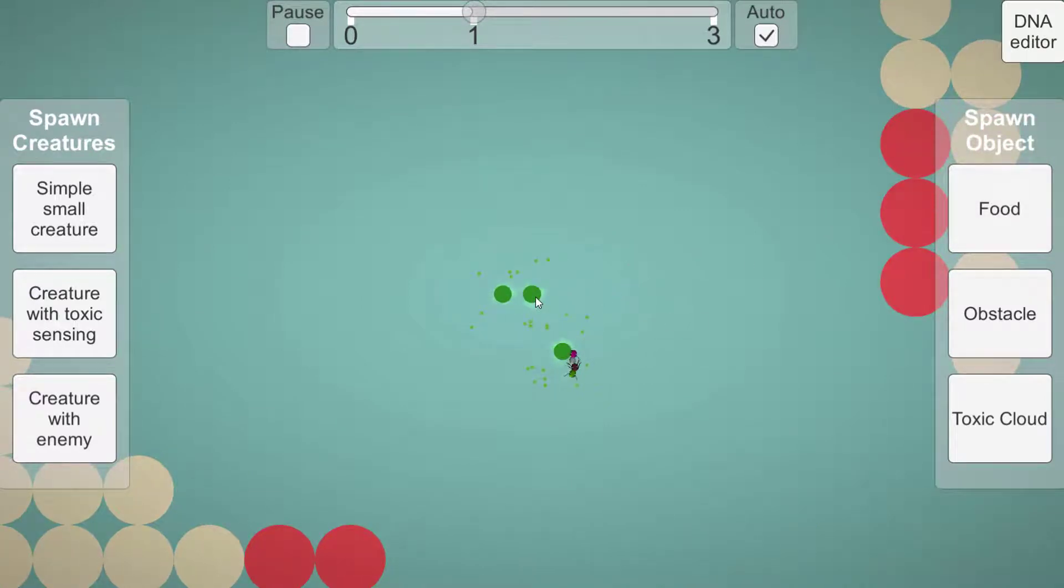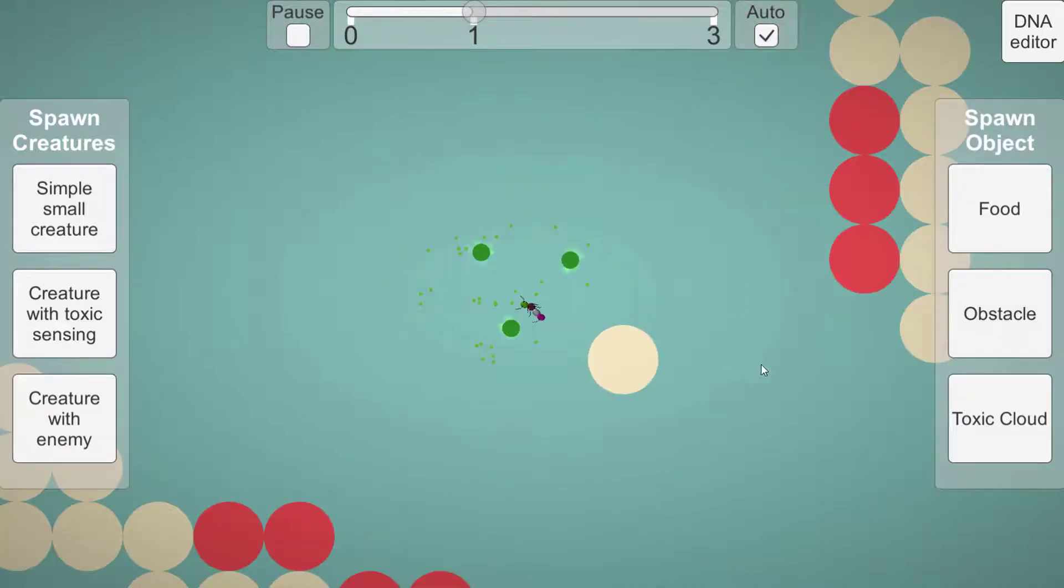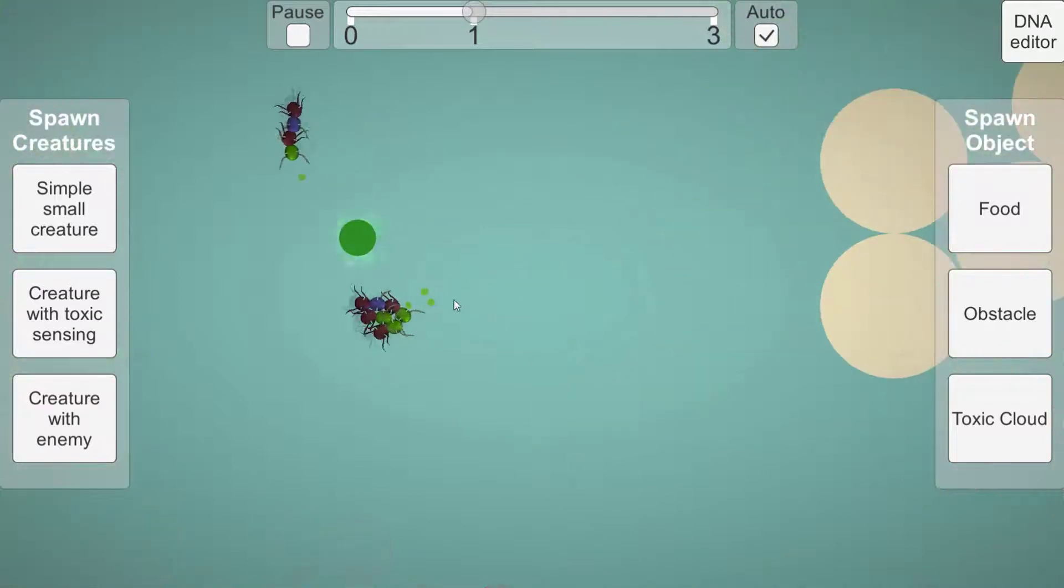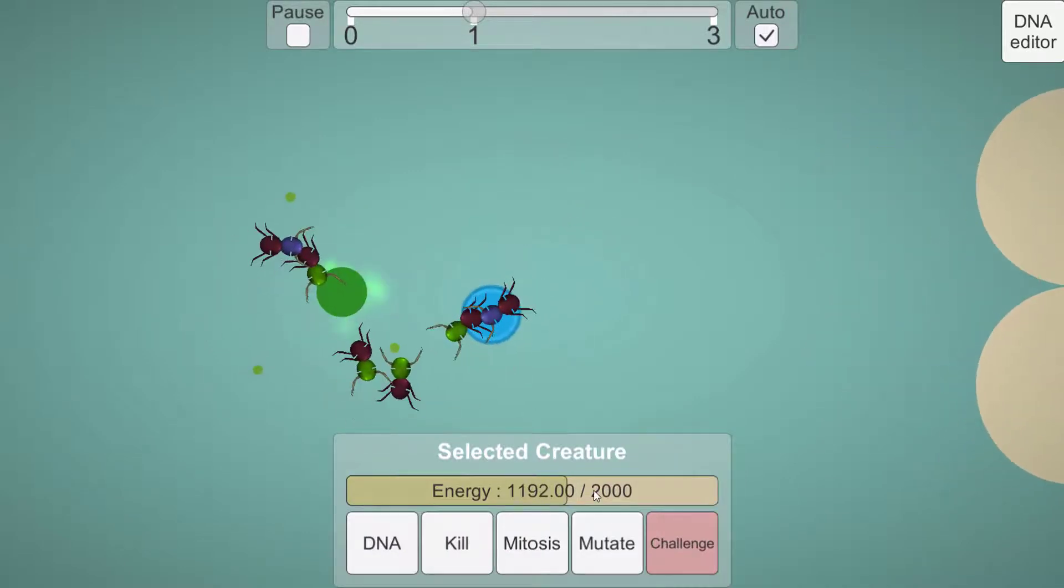The right panel is used to spawn objects like food sources, obstacles and toxic clouds. The player can then move these objects to create his own level. As you can see, the player can also move the creatures with a simple drag and drop mechanic. He can also select creatures.